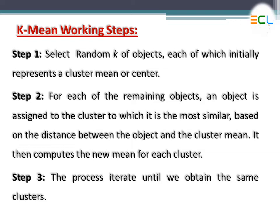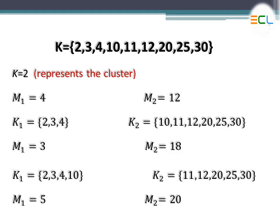In the second step, we check which object is closer to m1 or m2. If k is equal to 3, then we take three mean values: m1, m2, and m3. Once we complete and form all the clusters, this process continues until we get the same clusters and the same means across iterations. If we get the same clusters with the same means, we stop and have obtained our final clusters. This covers the three steps of the k-mean algorithm.